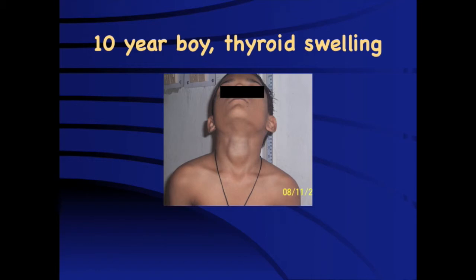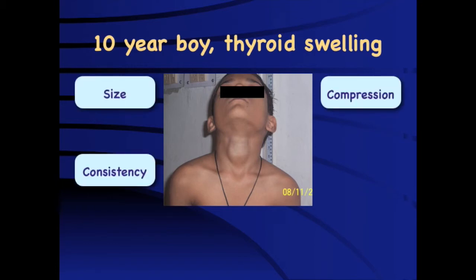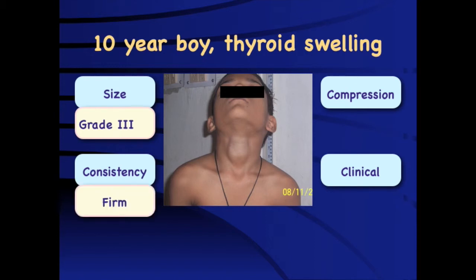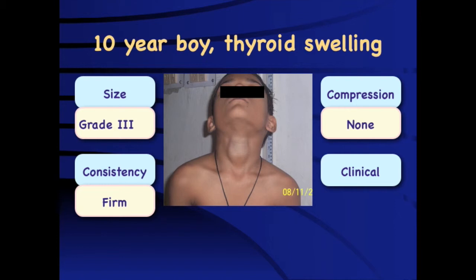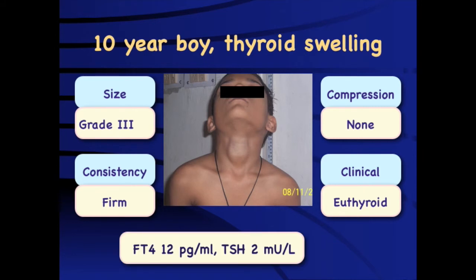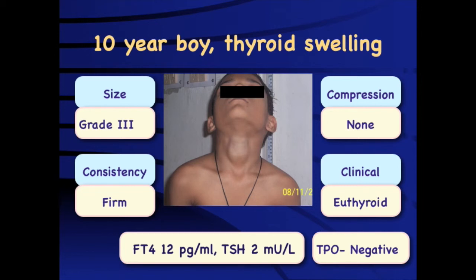In a different setting, a 10-year-old boy presents with thyroid swelling. We assess size, consistency, compression symptoms, and clinical course. This is a grade 3 goiter, visible in the neutral position, firm in consistency, without compressive symptoms, and the child is clinically euthyroid. Thyroid function tests — FT4, TSH — and TPO antibody were checked; TPO was negative.